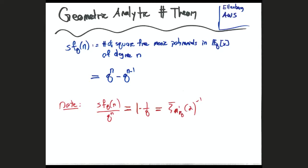If you divide by the total number of monic polynomials, you get the proportion 1 - 1/q, which equals the zeta function of A^1 over F_q evaluated at 2 inverse. This is the same theorem as for square-free integers over Q, which gives 6/π² = 1/ζ(2). The zeta function of P^1 is a rational function, but here it's A^1 rather than P^1, which is why we only get this one term.